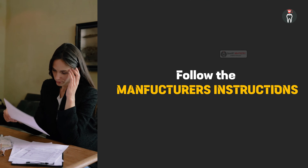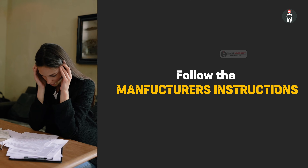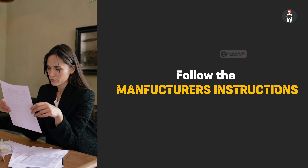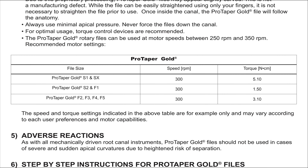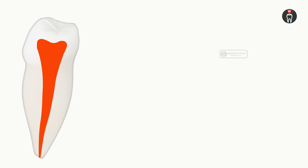Whenever it comes to the speed and torque settings for any specific file system which you are using, we always say that we have to follow the manufacturer's instructions. Let's see about the manufacturer's instructions for one of the common file systems, which is the ProTaper Gold. The recommended speed is in the range of 300, and the torque is from 1.5 to 5.1 Newton per centimeter. But there is a footnote which states that this file should not be used in case of severe and certain apical curvatures due to heightened risk of separation. So that indicates that these recommended settings are not for every clinical situation.